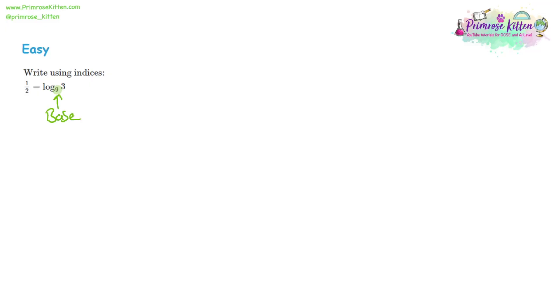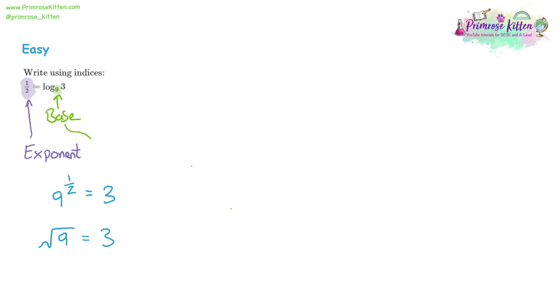For one more example, first find the base — the base is nine. Then find the exponent — the exponent is a half. Writing this as indices: nine to the power of a half. Nine to the power of a half equals three, because nine to the power of a half is the same as the square root of nine, which equals three. The base is nine and the exponent is a half, so the answer is nine to the power of a half equals three.